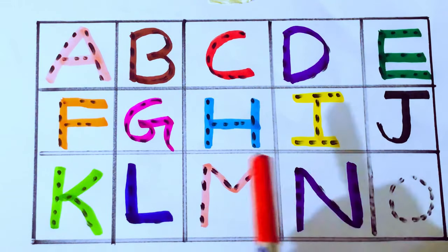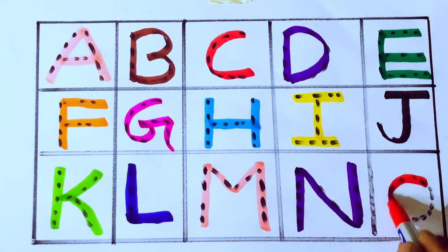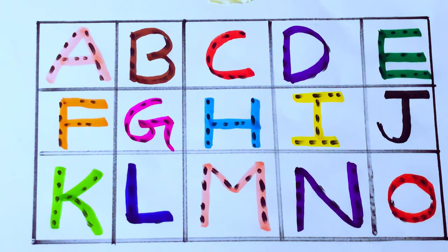N after O. Red color. Which letter? O for ox. O-X, ox. Let's learn with toys.